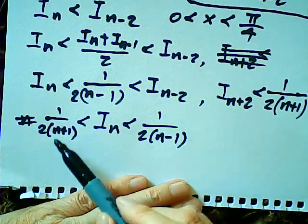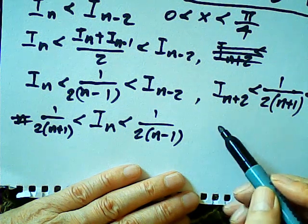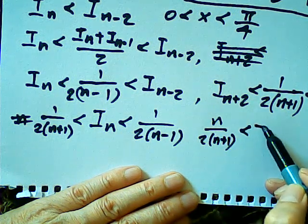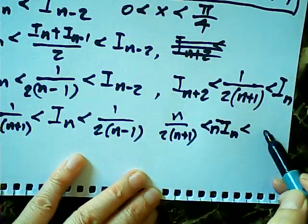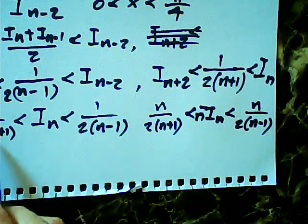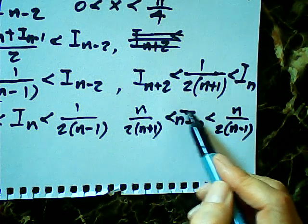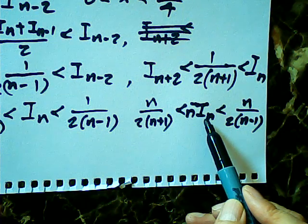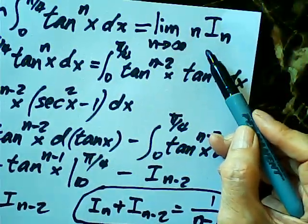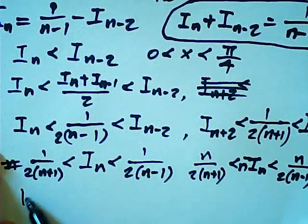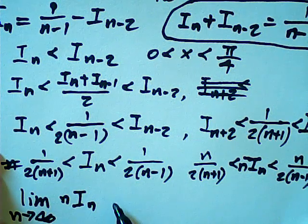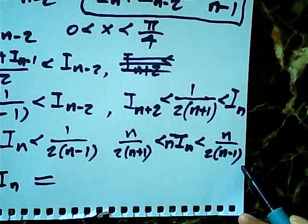So n·I sub n is squeezed between these two bounds. As n approaches infinity, n/(2n+1) → 1/2 and n/(2(n-1)) → 1/2 as well. Therefore, by the squeeze theorem, the limit as n approaches infinity of n·I sub n equals one half.